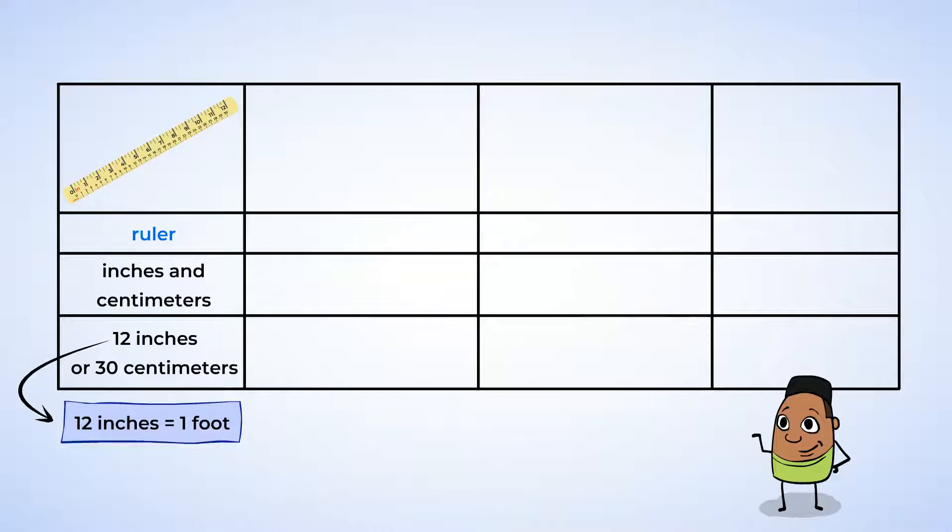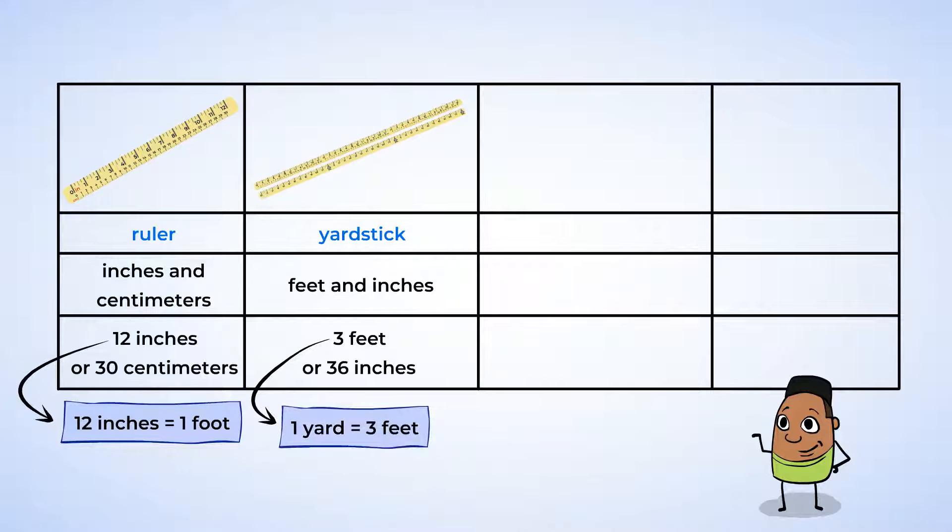And another tool that's also in inches is the yardstick. But it's longer than a ruler, and measures both feet and inches. A yardstick is 3 feet, or 36 inches long, or the size of three rulers. And its name comes from the fact that it's one yard long, although it might not always appear as a mark on the stick, but one yard is equal to three feet.